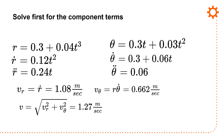Putting in the values: V_R equals R-dot, giving 1.08 meters per second. V_theta equals R times theta-dot, giving 0.662 meters per second. Taking the magnitude — square root of V_R² plus V_theta² — it equals 1.27 meters per second. So I have the velocity for this particular time.